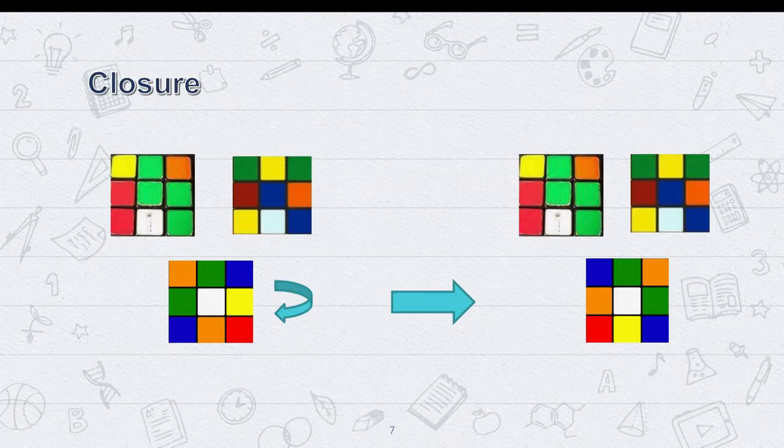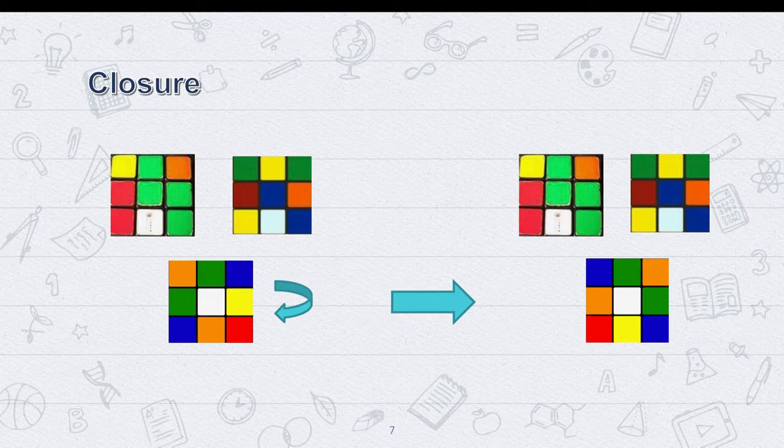For closure, all group operations must be closed or restricted to only group elements. So in our square, for any operation you do, like turn it one way or the other, you will still end up with an element of the group.